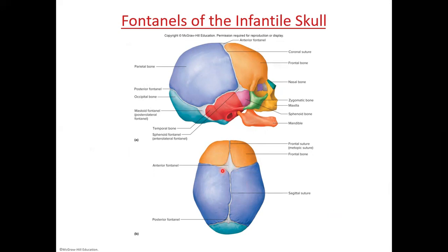You can see the soft spot here — the fontanelle — and there's another one in the back as well because these bones aren't fully grown yet. That's the end of our lecture part two on the parts of the skeleton.